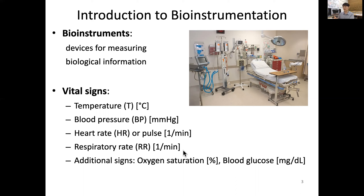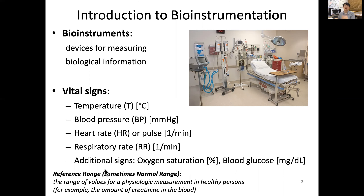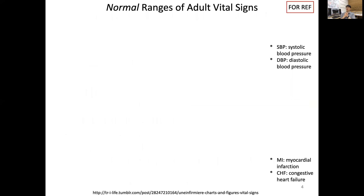For these vital signs, we want to determine whether a patient is having issues. We define a reference range or normal range — the range of values for a physiological measurement in healthy persons. For example, creatinine in the blood has a certain normal range, so when we measure a patient's creatinine we can say it may be abnormally high or abnormally low.